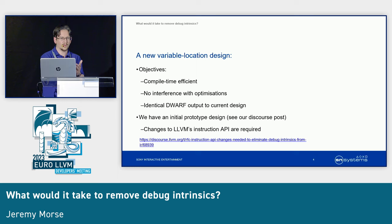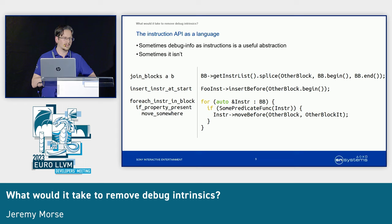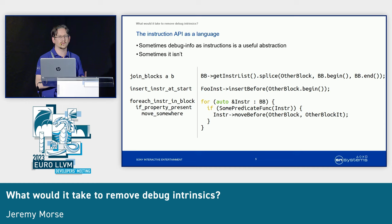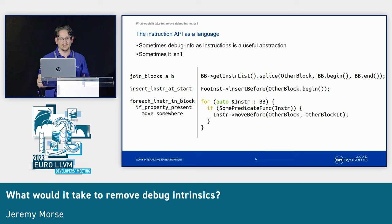What would it take to remove debug intrinsics? It would take action from you — optimization pass authors — to get on board with a change to LLVM's instruction API. Everyone in this room is in one form or another a compiler engineer, so I'd like to describe the problem in terms of languages. We can think of our optimization passes as being a high level language that speaks to LLVM IR blocks and functions in a transformation language. There are high level ideas of wanting to join blocks, insert an instruction, or iterate over instructions — fundamental to the optimization pass.